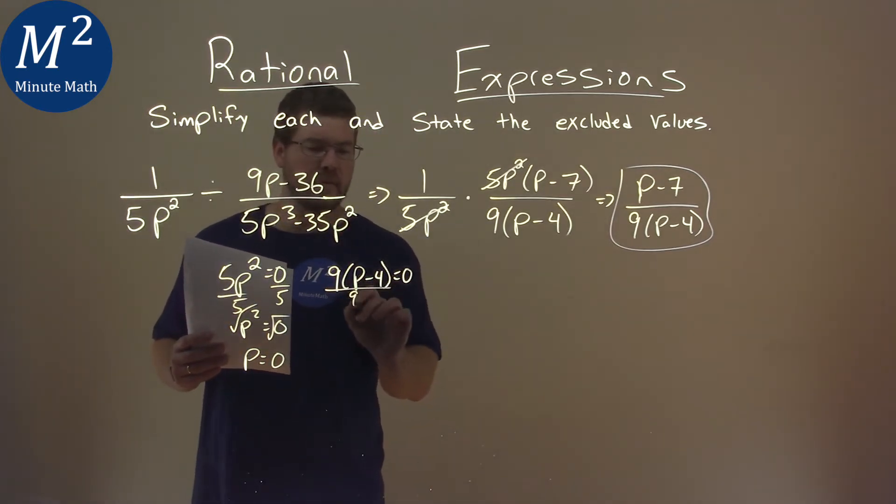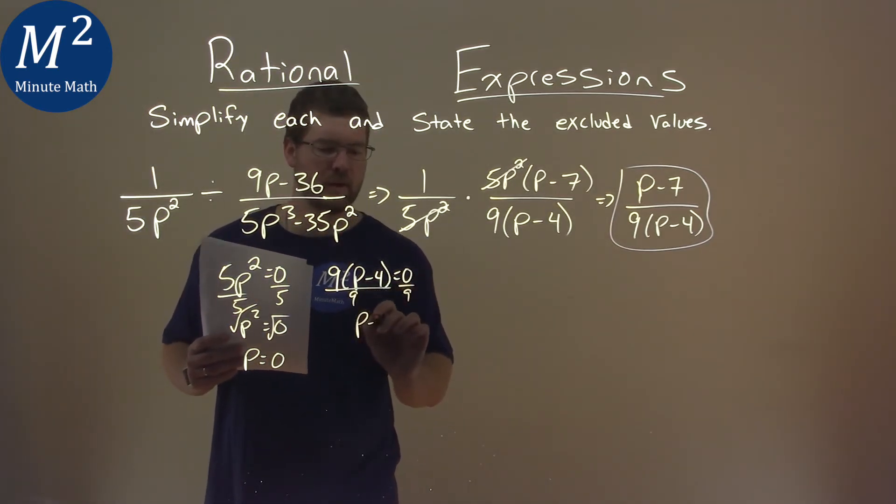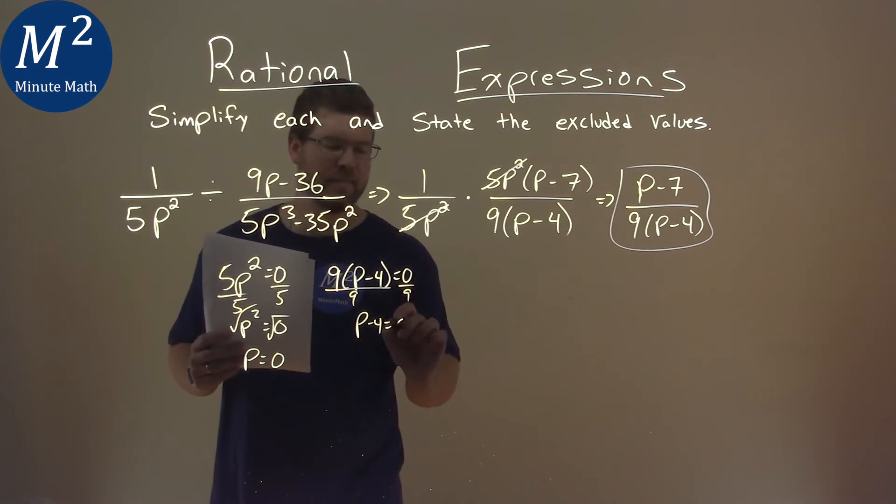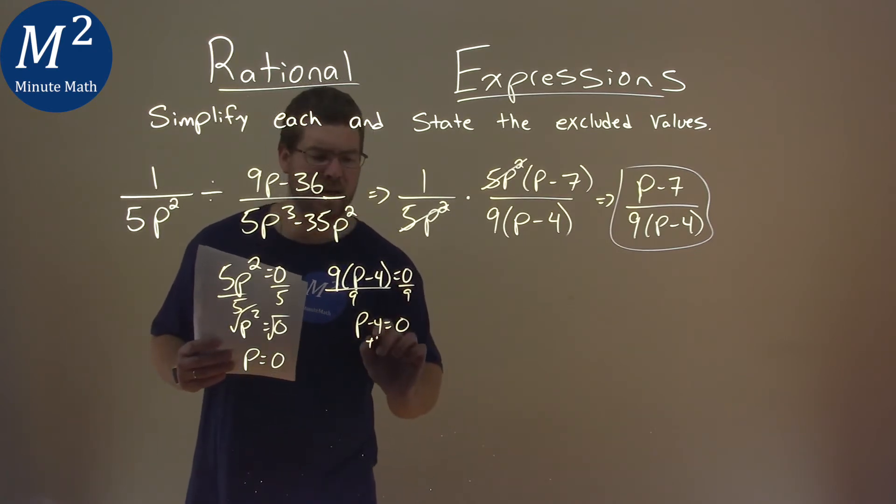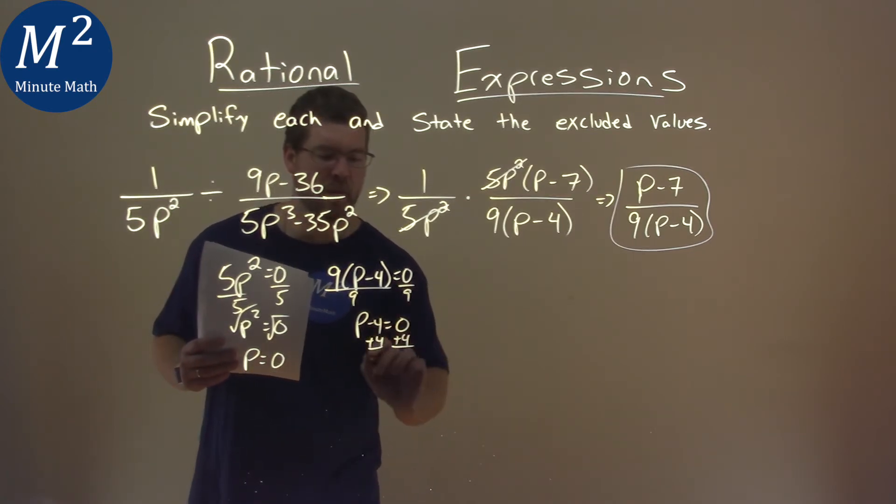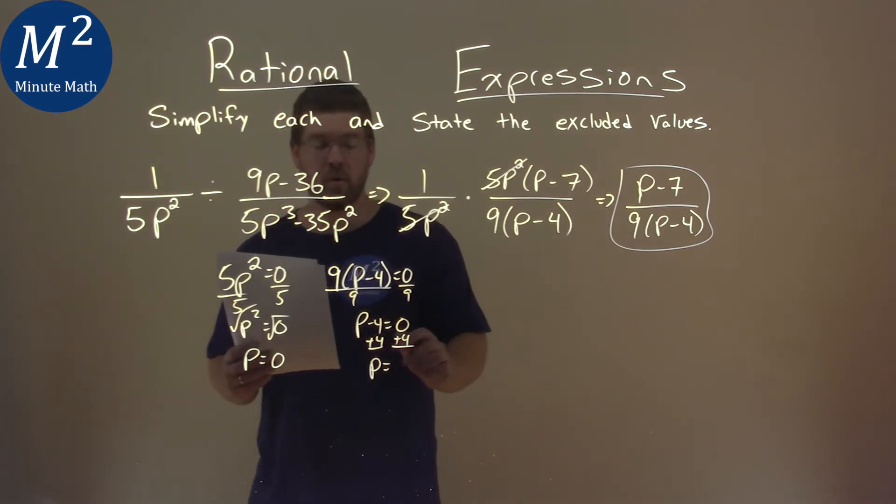Same thing here. We divide both sides by 9, and we have p minus 4 equals 0 divided by 9, which is 0. Add a 4 to both sides, and we have p equals 0 plus 4, which is 4.